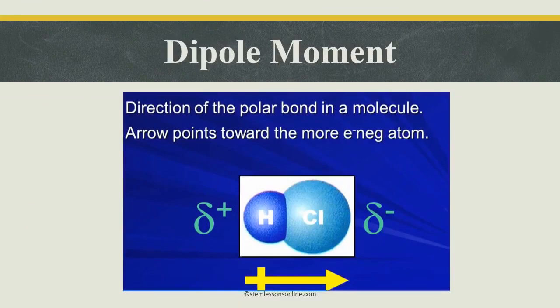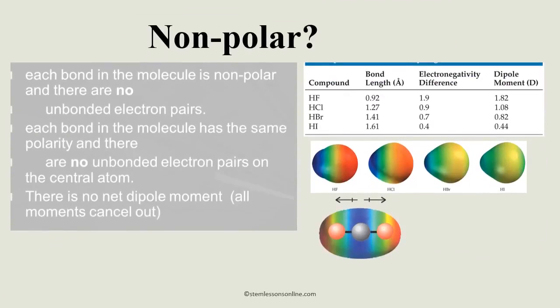The direction of the dipole moment arrow is marked towards the electronegative atom. For example, in HCl, chlorine is more electronegative, so we put an arrow pointing toward chlorine, with a small line crossing the tail of the arrow. The length of the arrow indicates the magnitude of the dipole moment, and the arrow always points toward the electronegative atom. This is how we decide whether a given molecule is polar or nonpolar.